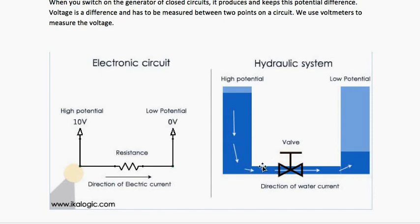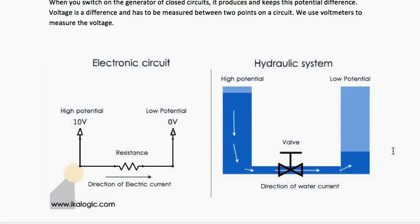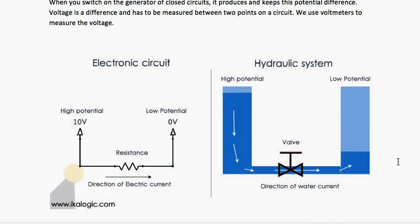Suppose in one second one liter of water flows through this part, or suppose in one second two liters of water flow through this part. That one liter or two liters of water is what current is — it's the volumetric flow rate, how much water flows through per unit time. In circuit terms, current is measured in amperes, so one ampere of current means one volume of water is flowing through the circuit at a given time.